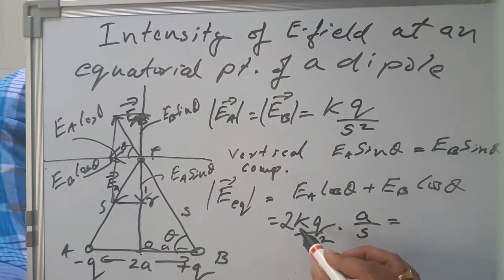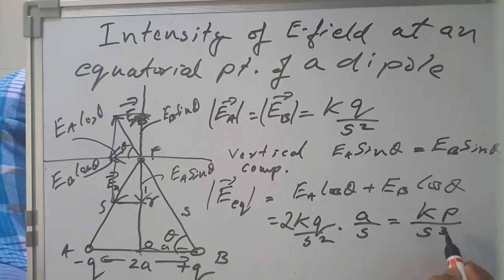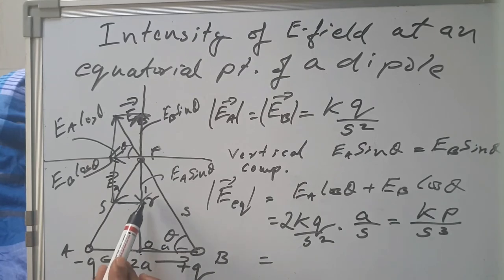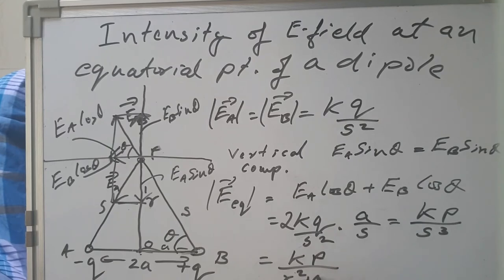Now 2qa is nothing but p, the dipole moment. Therefore, the expression can be written as kp upon s cubed. By Pythagoras theorem, since the distance from center is r and the adjacent side is a, s equals the square root of r squared plus a squared, i.e., to the power of 1 by 2. Therefore, the resultant becomes kp upon (r squared plus a squared) to the power of 3 by 2. This gives the expression for the magnitude of intensity of electric field on the equatorial line.